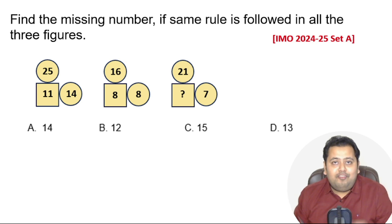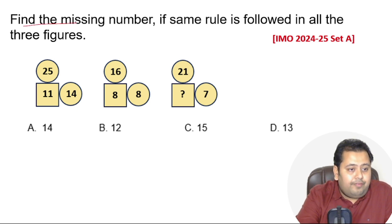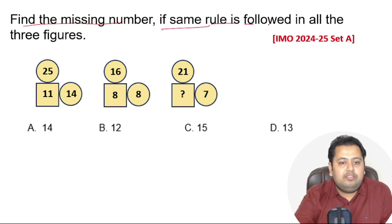Great! I hope you would have already solved the question. It was a pretty easy one, right? And if you have not, then let's go and understand what it has to say. The question says find the missing number if same rule is followed in all the three figures.